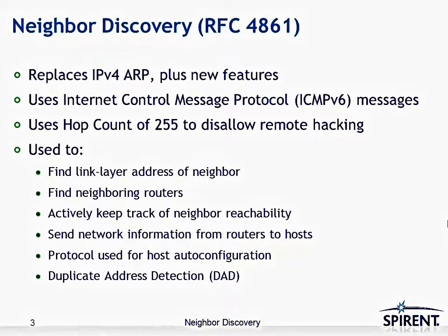So what is Neighbor Discovery? Neighbor Discovery is defined by RFC 4861. It's a protocol that replaces IPv4's ARP, or Address Resolution Protocol, plus it adds many new features. It uses ICMPv6 messages as its basis for protocol exchange.